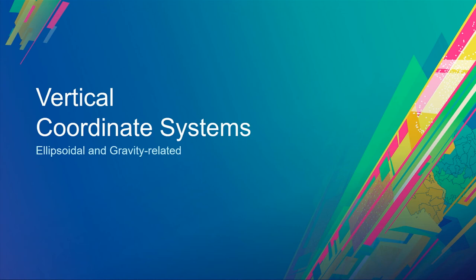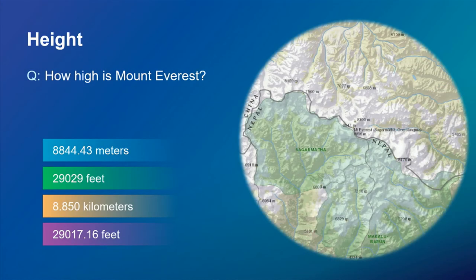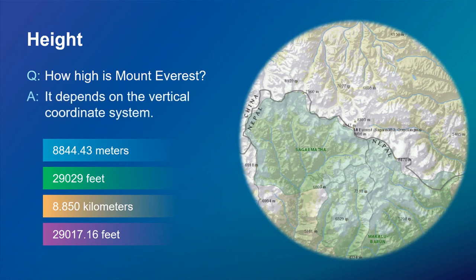Now let's briefly discuss vertical coordinate systems. How high is Mount Everest? Again, we have four different answers — including two that are close but not exactly equal, just over 29,000 feet — depending strictly on which vertical coordinate system is being used.